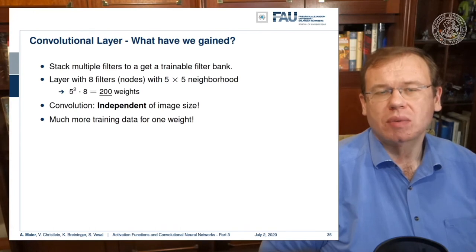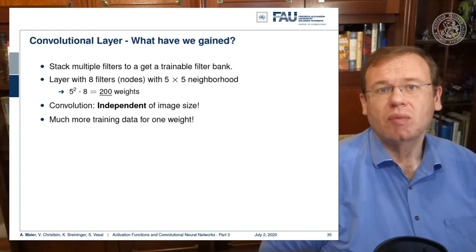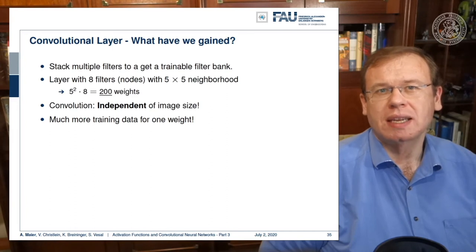Let's say we have eight weights resulting in eight nodes and a five by five neighborhood. Then we suddenly have five to the power of two times eight equals 200 weights. 200 weights are considerably less than the two million weights that we've seen before. Also, convolution can be applied independently of the image size.